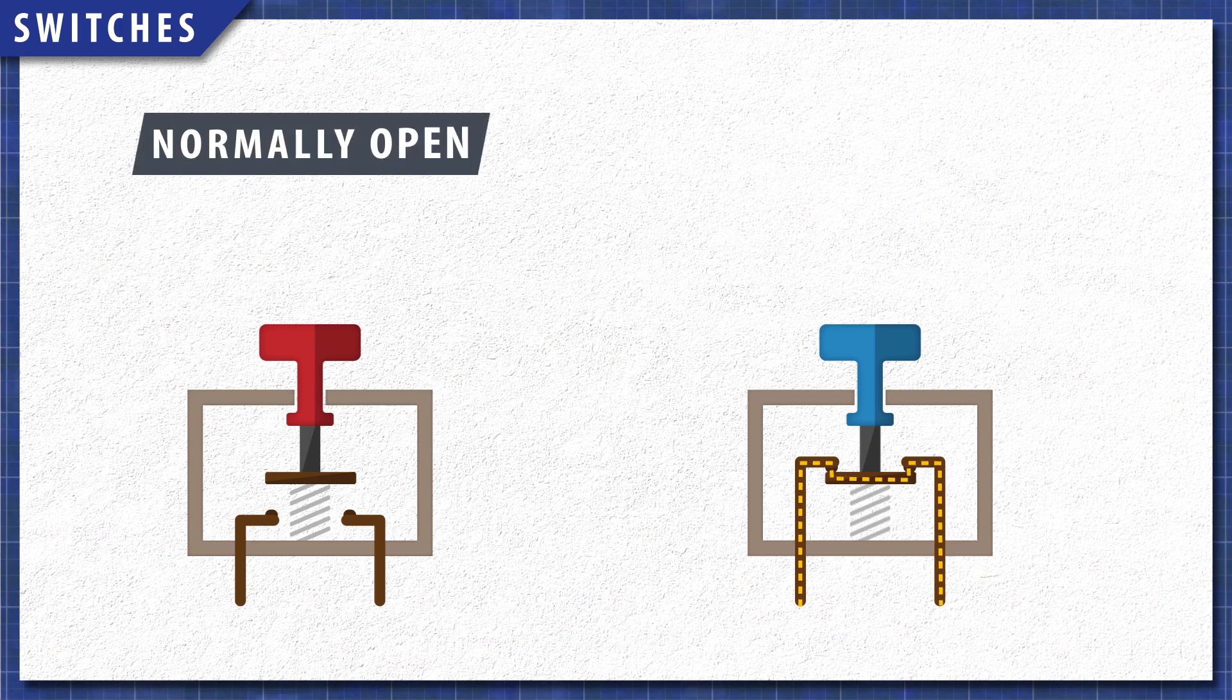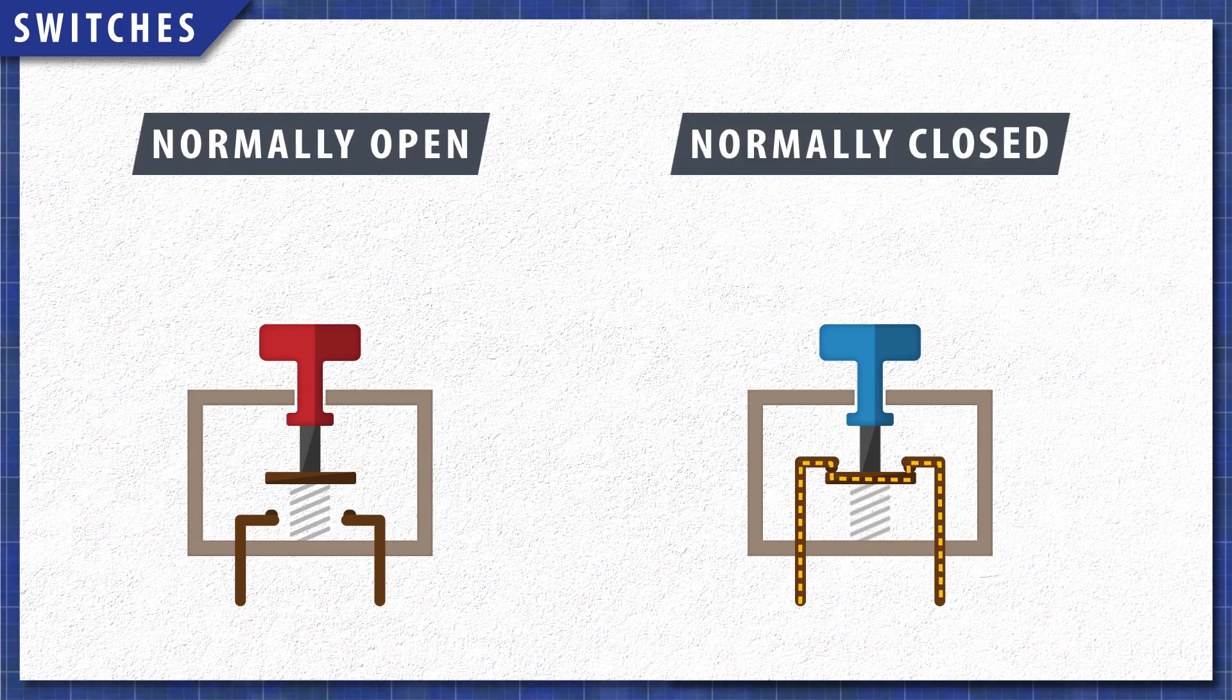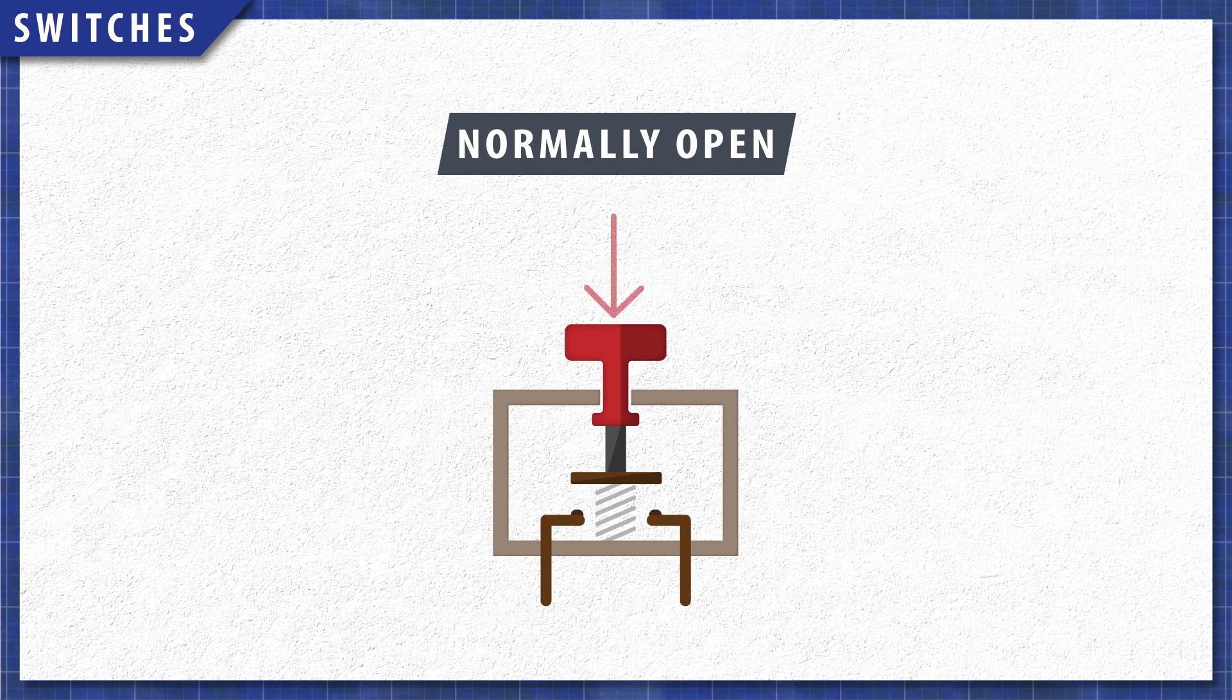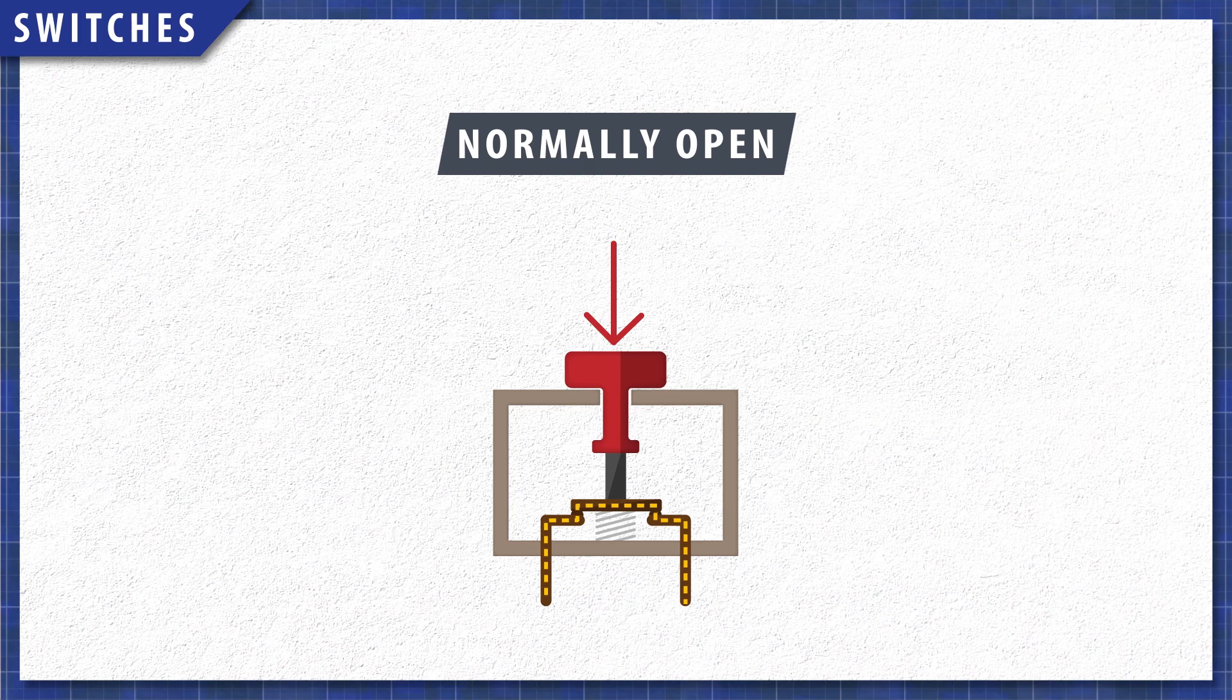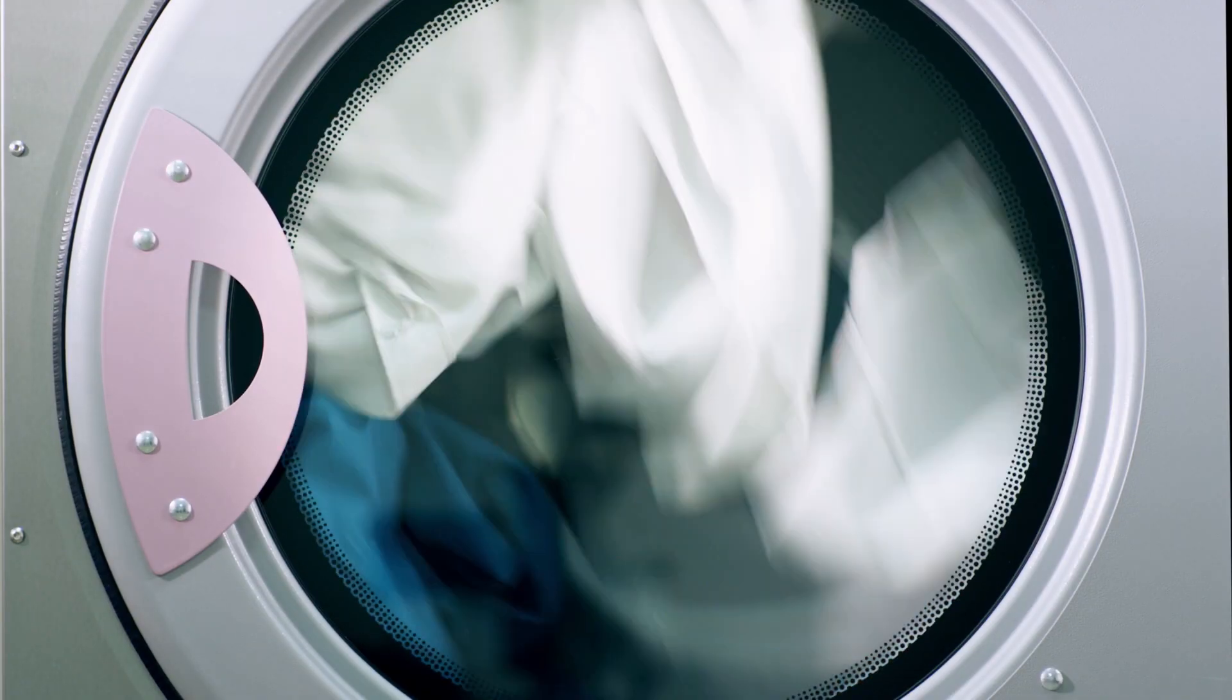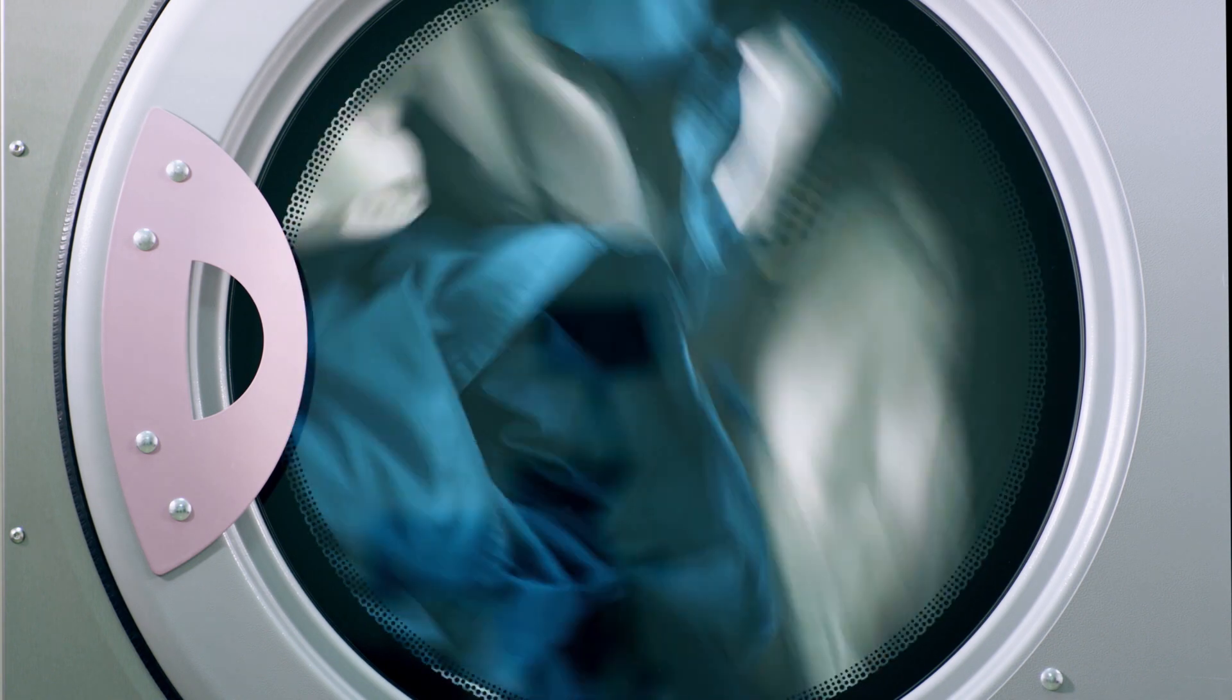Switches are either normally open or normally closed. Normally open switches do not have continuity until the switch is pressed closed. One example is a dryer door switch that shuts off the dryer when the door is opened.